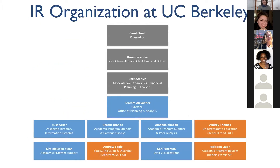This slide shows the organization of our office as well as where we fit in the larger scheme of campus. We report up to the Vice Chancellor of Finance, Rosemarie Ray, who reports to the Chancellor. We also report to Chris Stanage, the Associate Vice Chancellor of Financial Planning and Analysis, and then we have the Office of Planning and Analysis. All of the blue boxes along the bottom represent the staff who are directly in OPA.